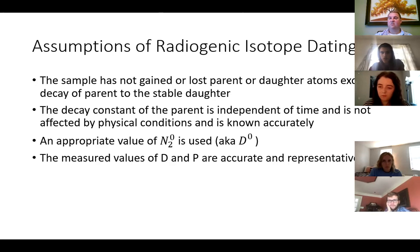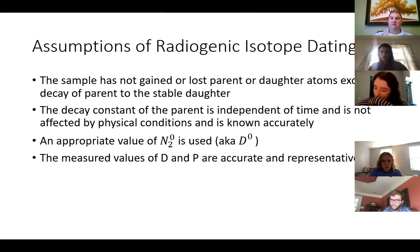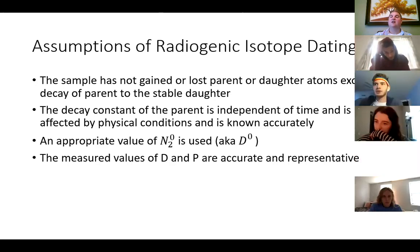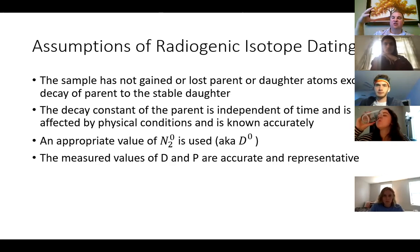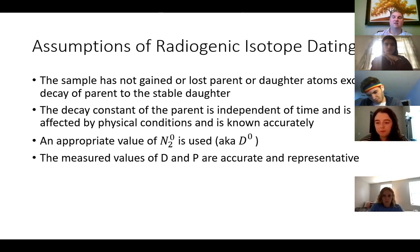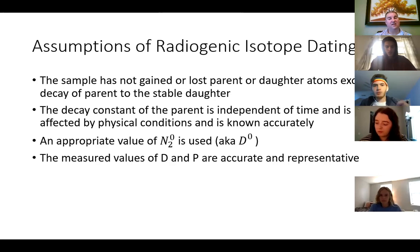One type of decay where there's something else reacting with the parent is electron capture. So if you are somehow able to strip the electrons — or at higher pressures you can squeeze those electrons a little bit more closely to the nucleus — you could actually accelerate the rate of electron capture. So we do not use nuclides that undergo electron capture to do radiometric dating because the decay constant is not so constant.